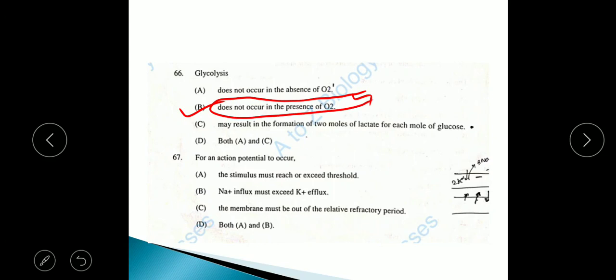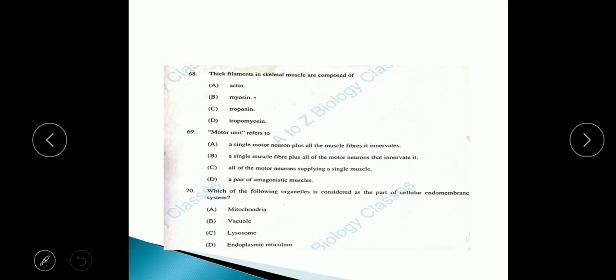Question 67: For an action potential to occur, the stimulus must reach or exceed threshold and Na+ influx must exceed K+ efflux. The answer will be option D. Next, thick filaments in skeletal muscle are composed of option B, myosin.